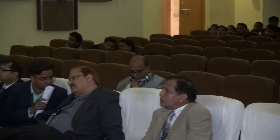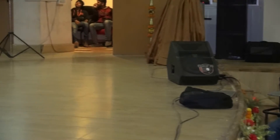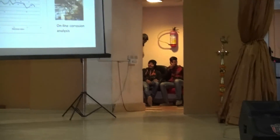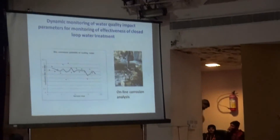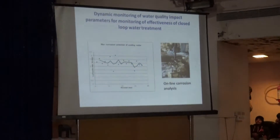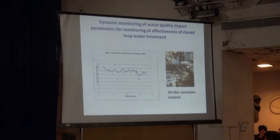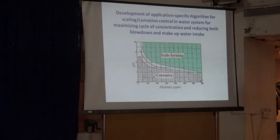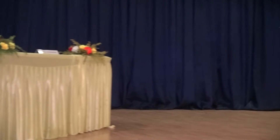Once we have full control over dissolved oxygen, the water cycle — that is, the number of cycles the water can be used — can be improved. Dynamic monitoring of water quality in terms of corrosion and scale production can again increase the water cycle. Cycle means the number of times the water can be used in a plant. Development of application-specific algorithms is one solution.